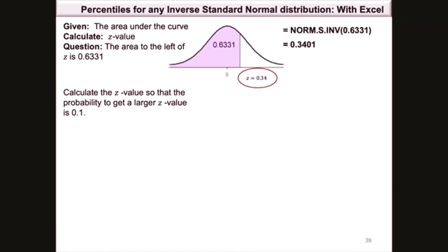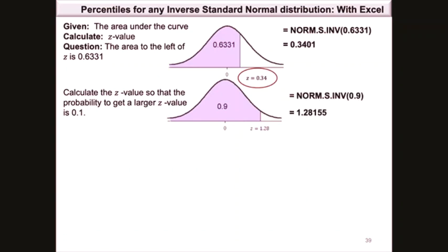For the second question, we need the z value such that the probability of getting a larger z value is 0.1. Since we are given the probability to the right, we need the probability to the left, which is 0.9. Using =norm.s.inv(0.9) gives z = 1.28155.